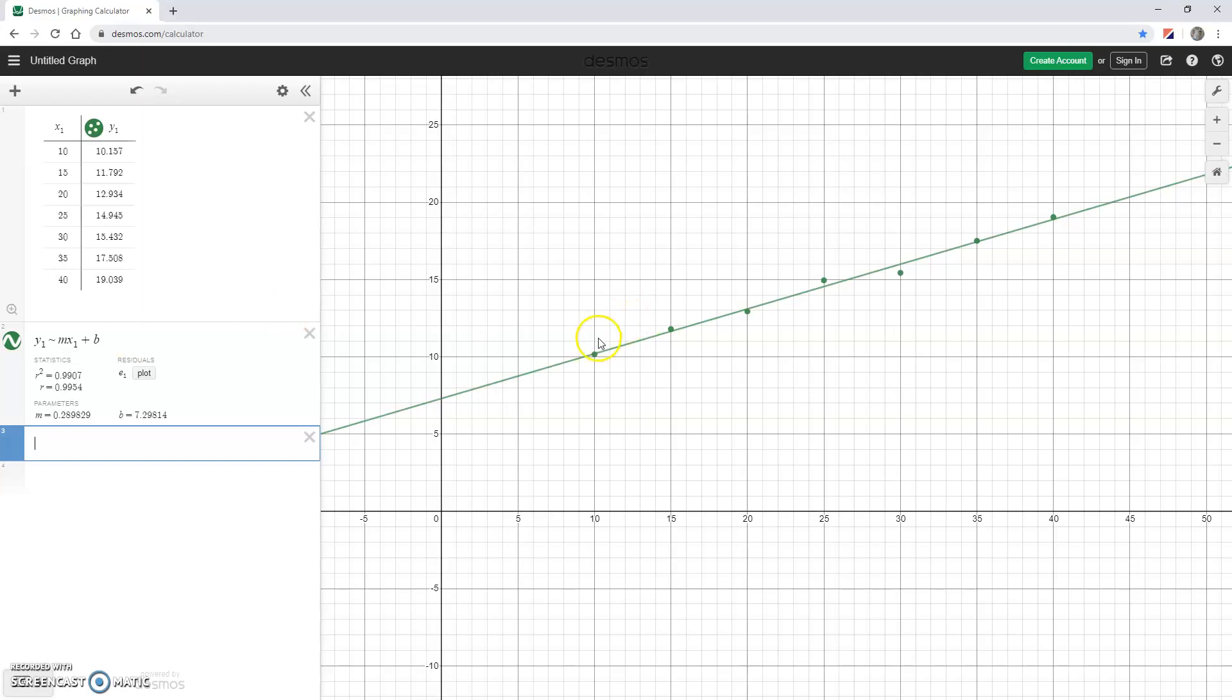That correlation coefficient corresponds to the fact that this line is a very good fit for the data. The points are falling very close to it, and we're seeing that increasing pattern.